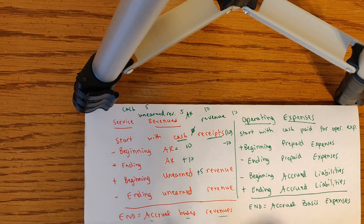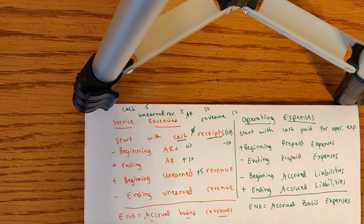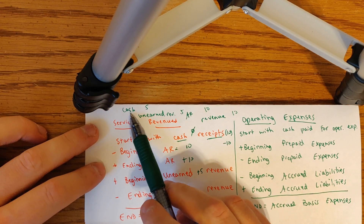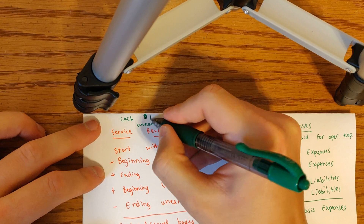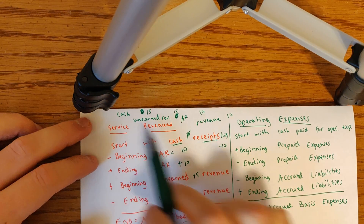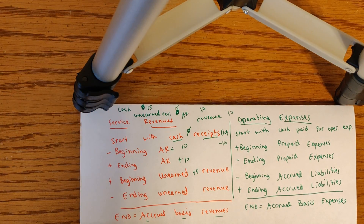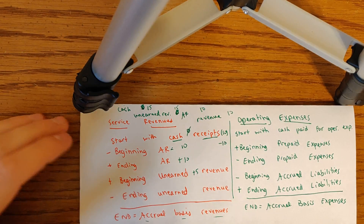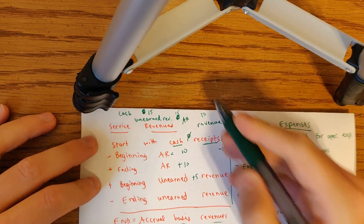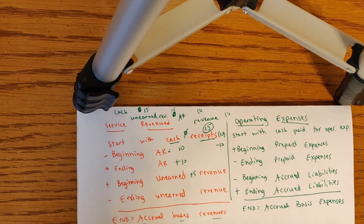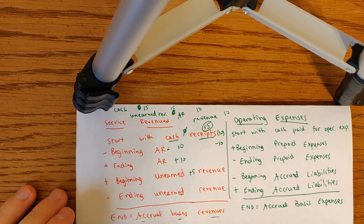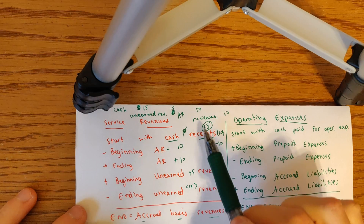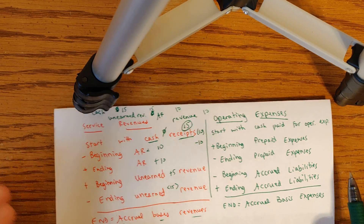Finally on the revenue side, ending unearned revenue is subtracted. If we collected $15 of unearned revenue this period, we debited cash and credited unearned revenue, so that $15 is included in cash receipts. However, it's not current period revenue — it'll be revenue of the next period. So we subtract that $15 out to zero it out. That covers everything on the revenue side.